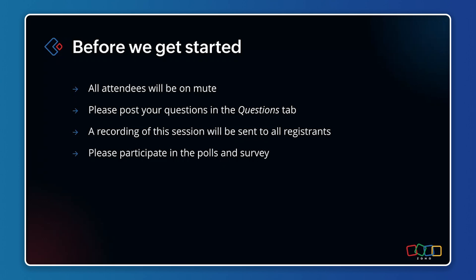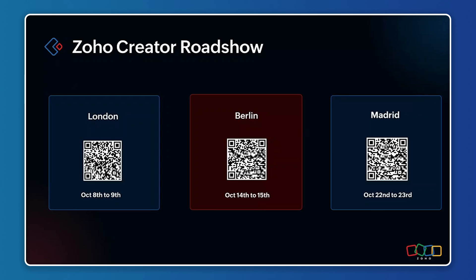We have a roadshow planned in the coming month. From October 8th to 9th we'll have a roadshow in London where we'll be training participants to build applications with hands-on experience. We will also have roadshows in Berlin and Madrid on October 14th–15th and October 22nd–23rd respectively. You can scan the QR code to register if you are nearby any of these places.